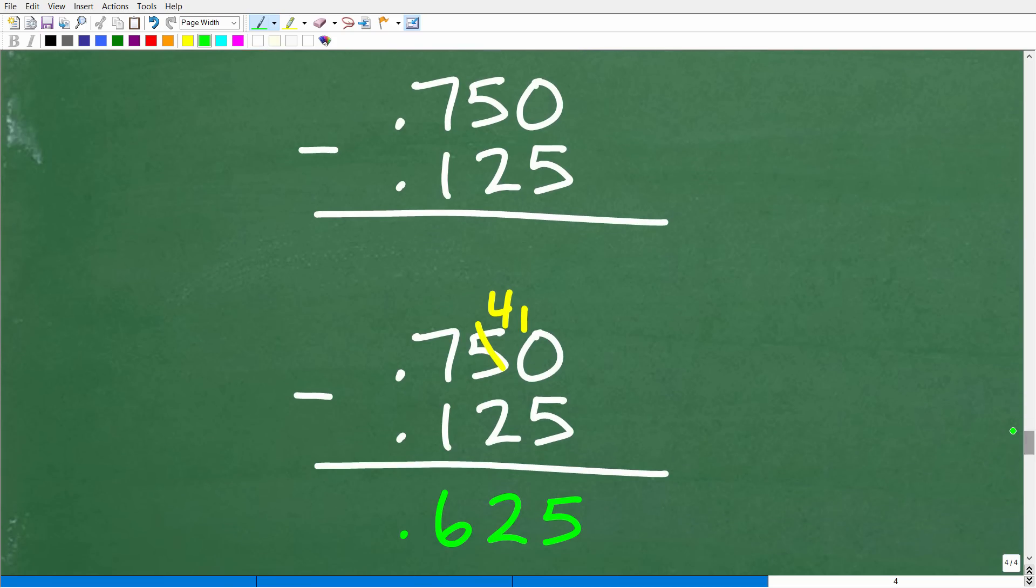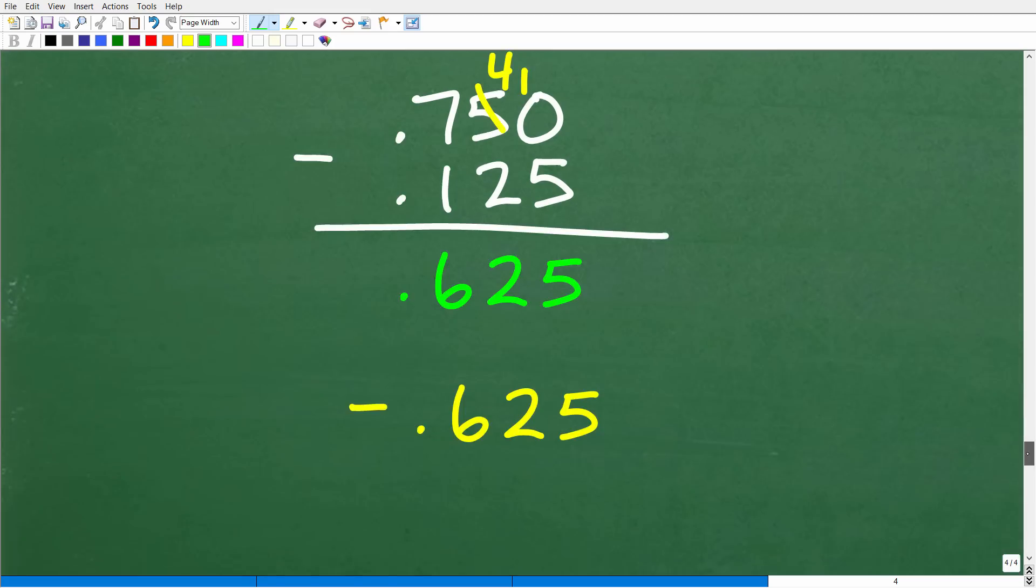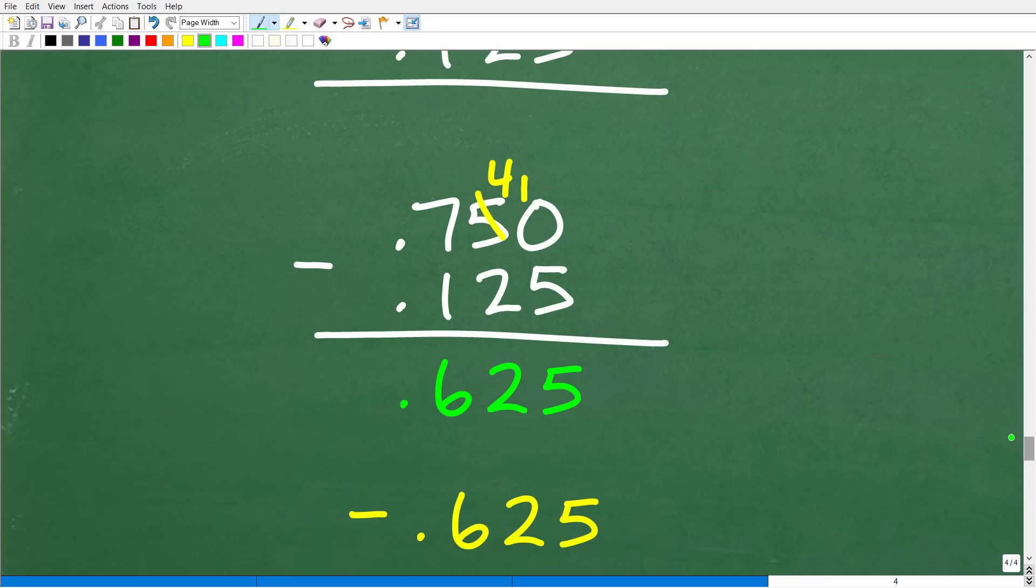Okay, so we have point seven-five-zero minus point one-two-five, and here is the work. Alright, so when you subtract these two decimals, you're going to get point six-two-five. And again, our answer is negative.